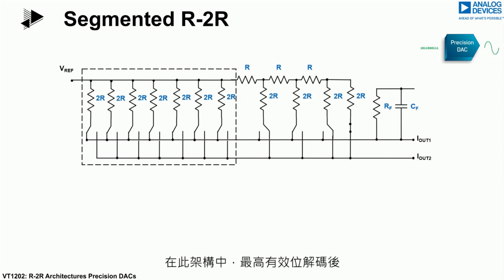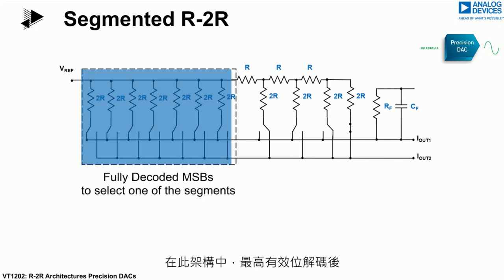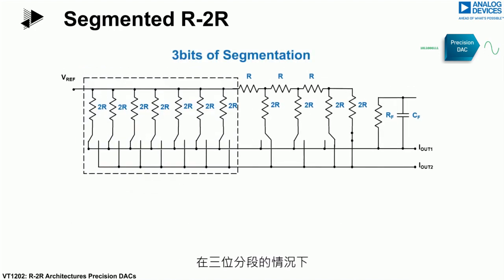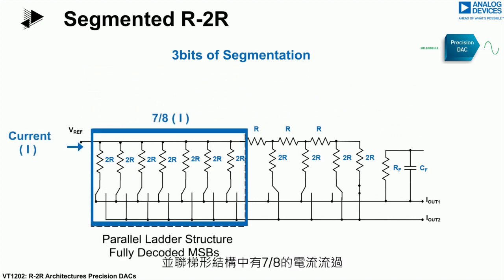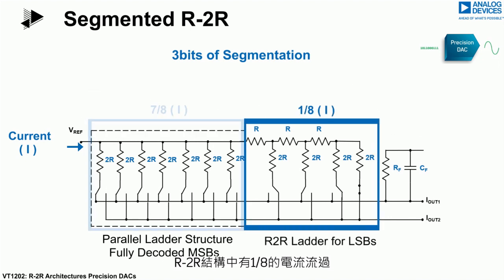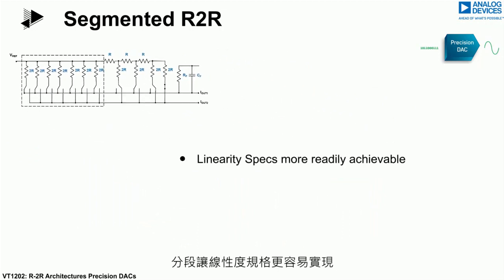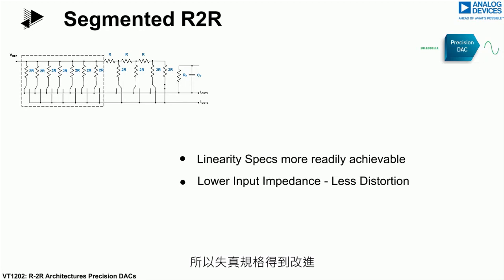For the segmented architecture, the most significant bits are decoded to select one of the segments. In the case of three bits of segmentation, seven-eighths of the current will flow in the parallel ladder structure and one-eighth in the R2R structure. Segmentation allows linearity specifications to be more easily achieved. In this architecture the input impedance is much lower, leading to an improved distortion specification.